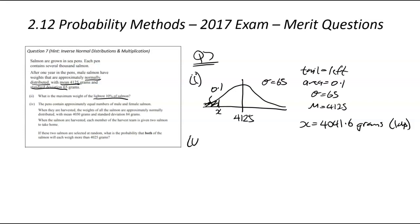Let's have a look at IV now. The pens contained an equal number of male and female salmon. When they were harvested, all the salmon were approximately normally distributed. So this here were male salmon. We're now talking about, you know, all of the salmon. So both male and female, yeah. Combined new numbers, they've got a mean of that and a standard deviation of that. When the salmon are harvested, each member of the harvest team is given two salmon. That's what makes it a multiplication type question as well. If the salmon were selected at random, what is the probability that both salmon were more than 4,025?